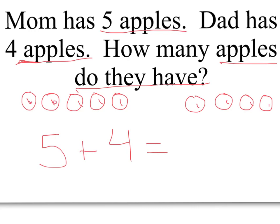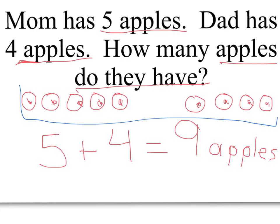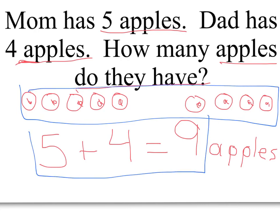One, two, three, four, five, six, seven, eight, nine. And our label is — you're right — apples. Do you have everything a good story problem needs? You have a picture, a number sentence, and an answer with a label.